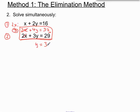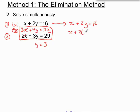Once we've found one of our solutions — y equals 3 — we're going to pick the easier of the two original equations, which is the first one. We're going to substitute a 3 wherever there is a y. Our original equation was x plus 2y equals 16. If we substitute a 3 in wherever there's a y, we get x plus 2 lots of 3 equals 16. 2 lots of 3 is 6, so x plus 6 equals 16. To get x on its own, we minus 6 from both sides, giving x equals 10.